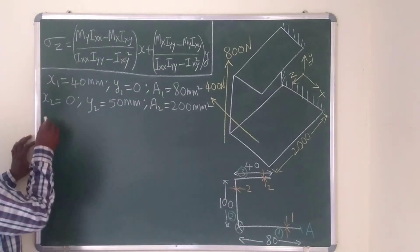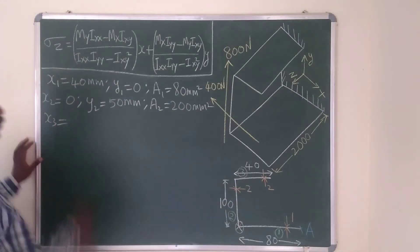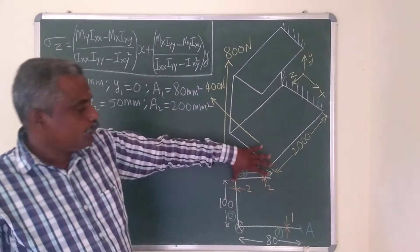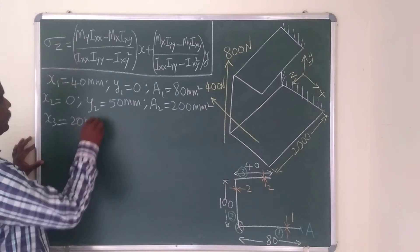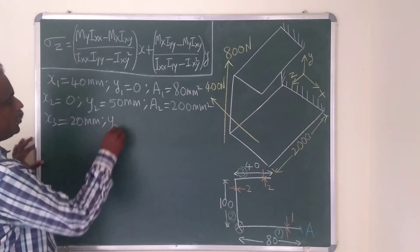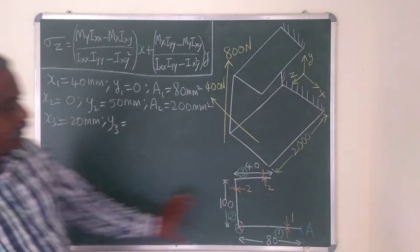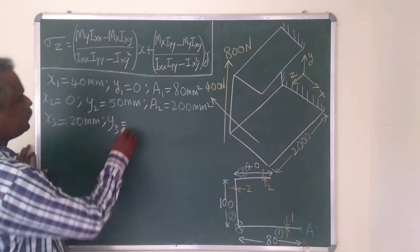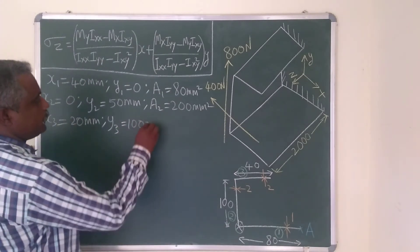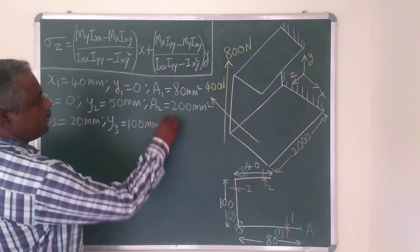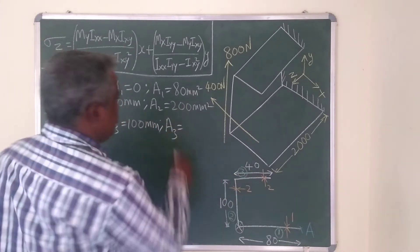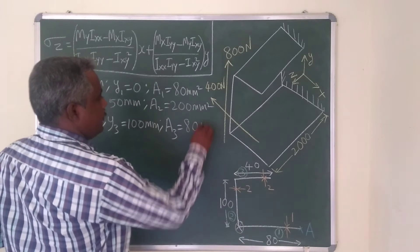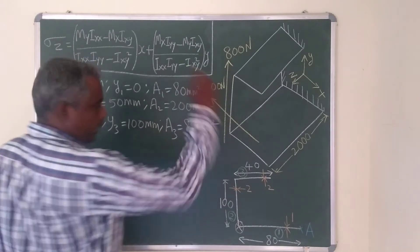Similarly for the third section: X3 = 40/2 = 20, taking this as my reference point. Y3 = 100 mm. Area of Section 3 = 40×2 = 80 mm².